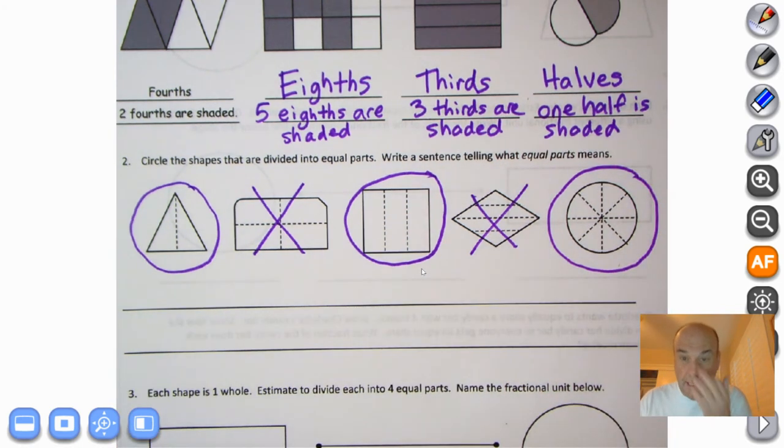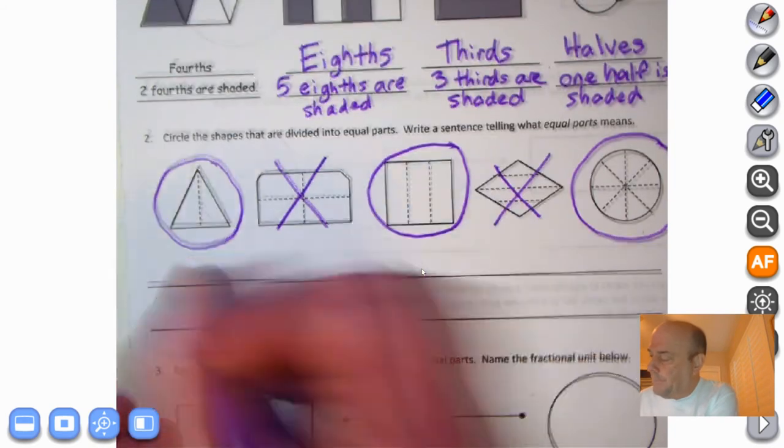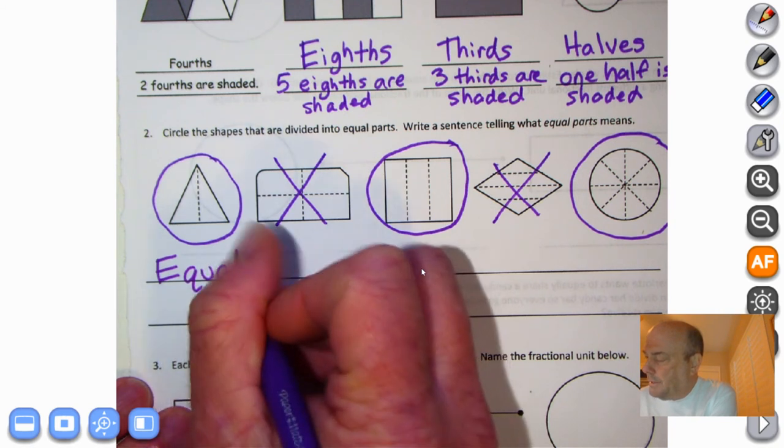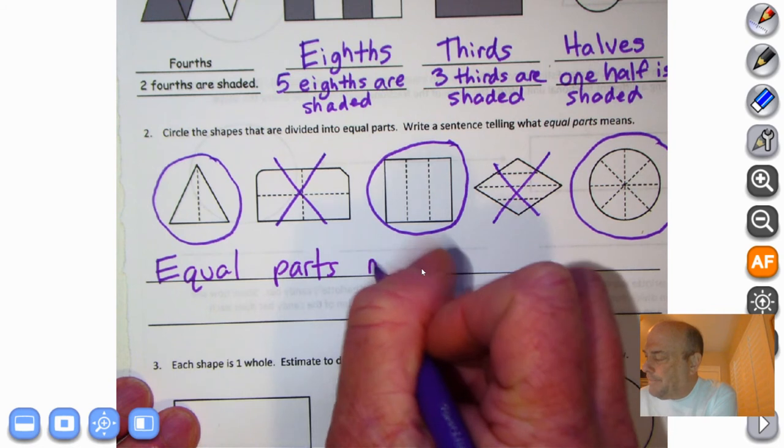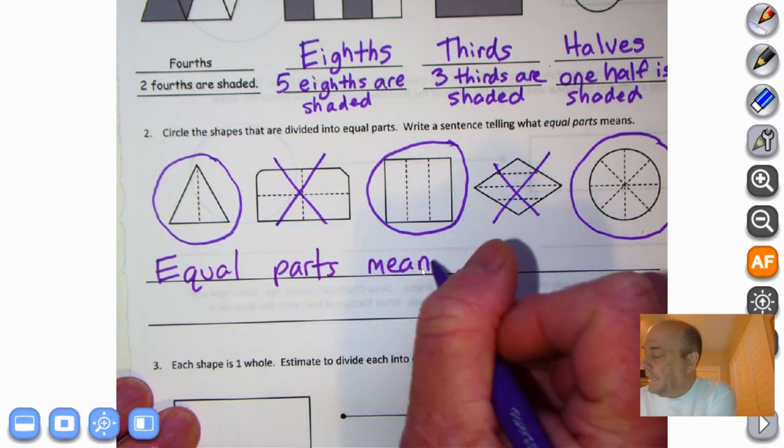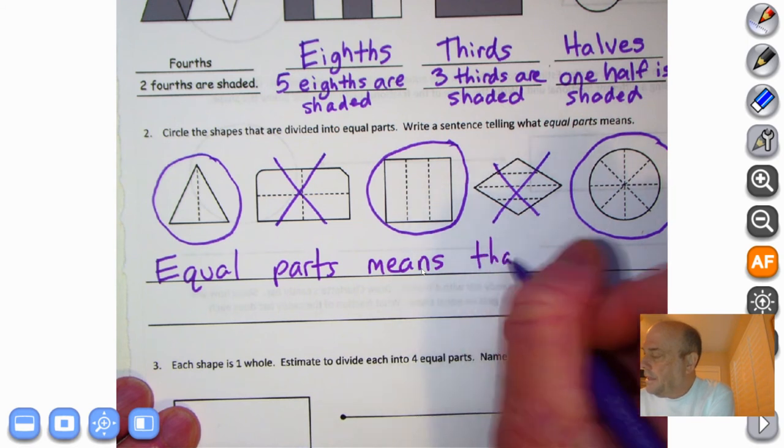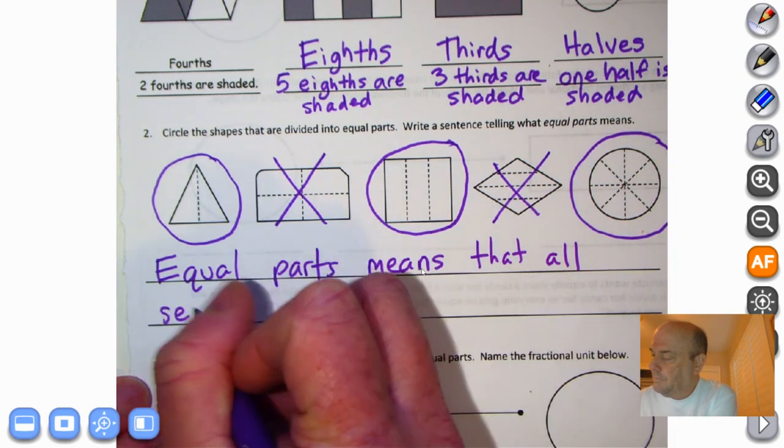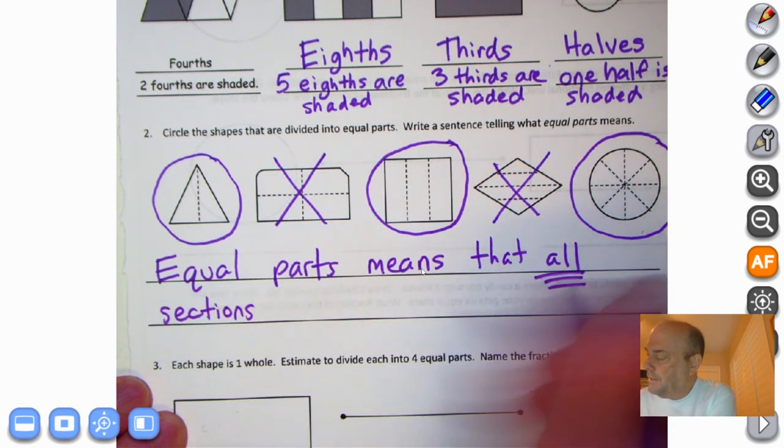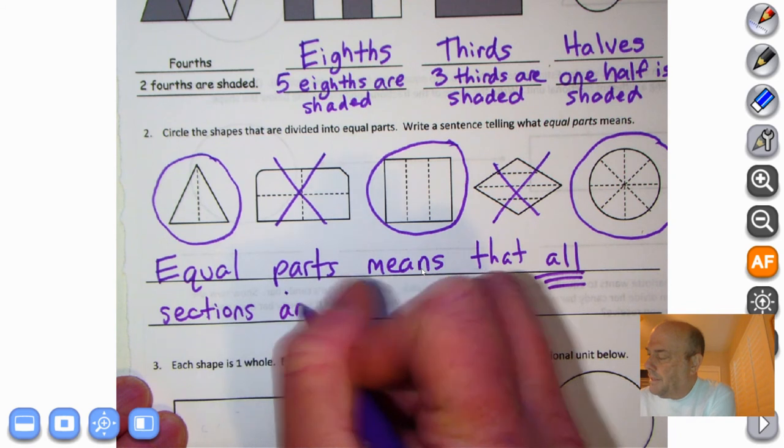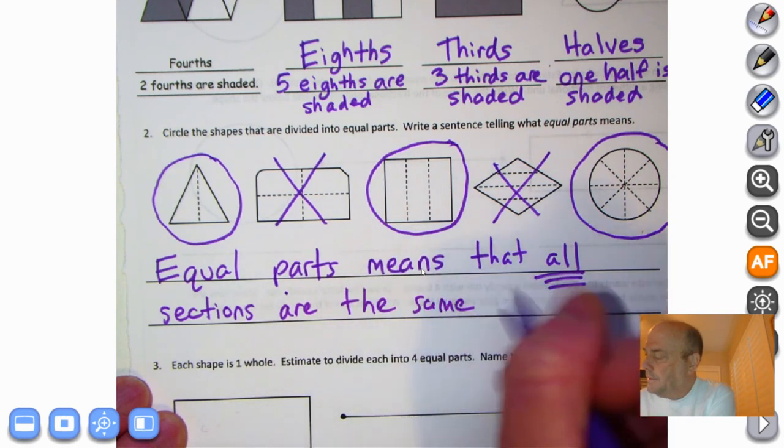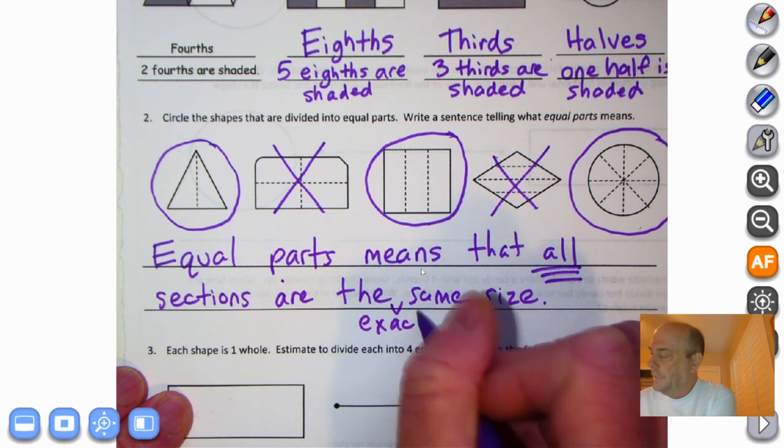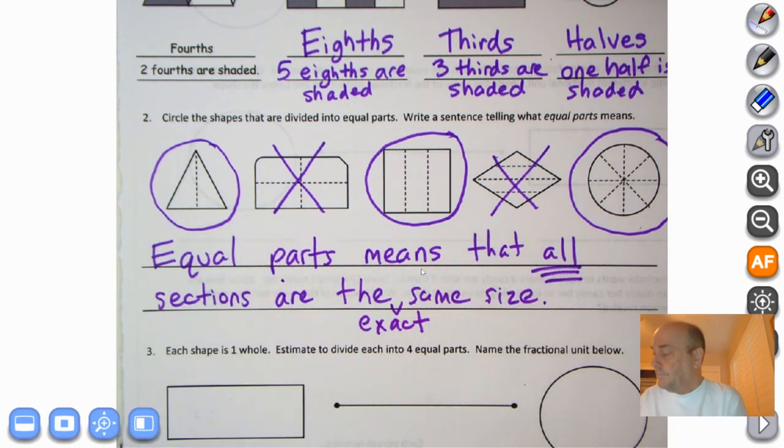So now we're going to write a sentence telling what equal parts mean. Excuse me. Equal parts mean that all, and we'll just use a different word, sections, and I'm going to underline the word all, are the same size. And we can even put exact, because these are pretty close right there, but they weren't exactly the same size.